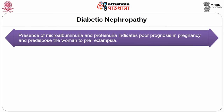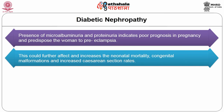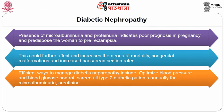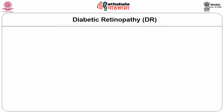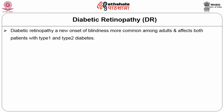Additional risk factors for nephropathy include longer duration of diabetes, family history, ethnicity, male gender, cigarette smoking, and hyperlipidemia. Presence of microalbuminuria and proteinuria indicates poor prognosis in pregnancy and predisposes women to preeclampsia, increasing neonatal mortality, congenital malformations, and caesarean section rates. Management includes optimized blood pressure and blood glucose control, annual screening of type 2 diabetics for microalbuminuria and creatinine, and reduction of protein intake to prevent further progression.